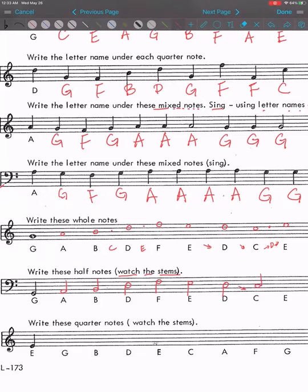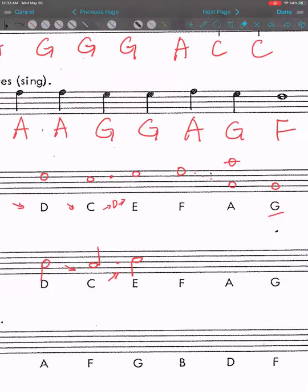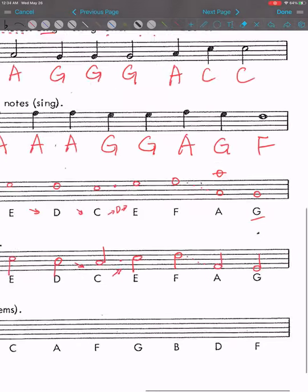And then going up again, C, D, E. So line, space, line, space. So it's going to be here. And the stem will go down. And then the next one is F. So F is here. A is coming down. So F, E, D, C, B, A here, first space. Now, so the stem is going up. And then G is the very next note below that. Done.